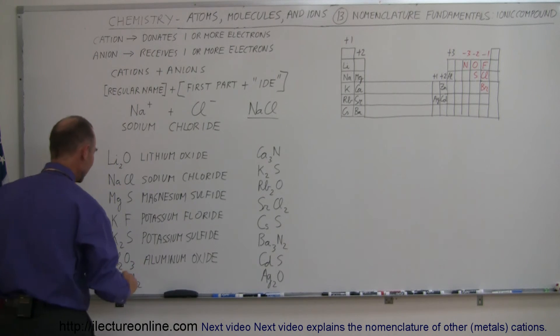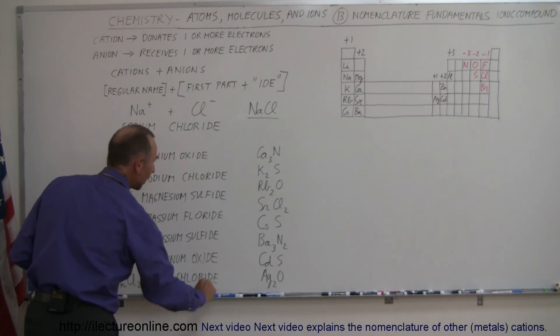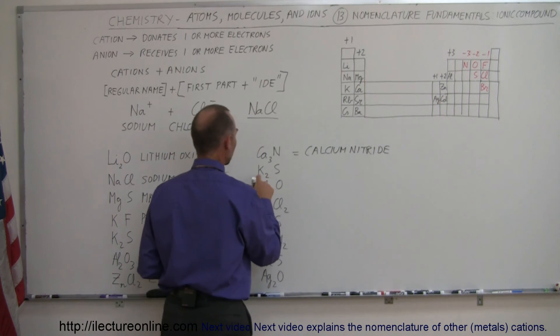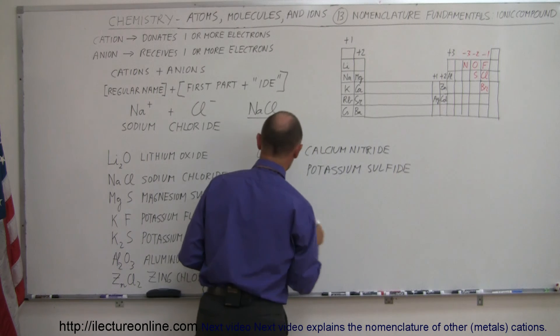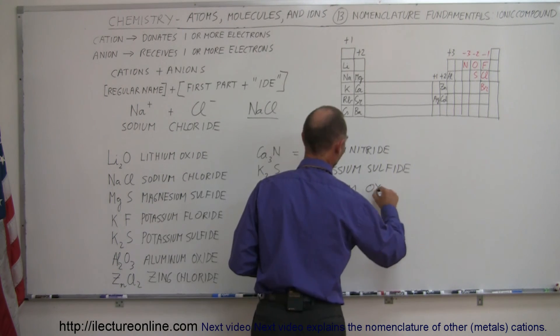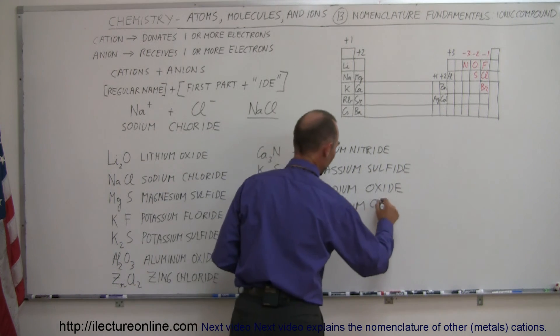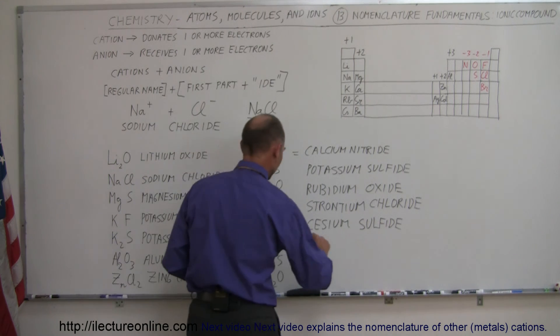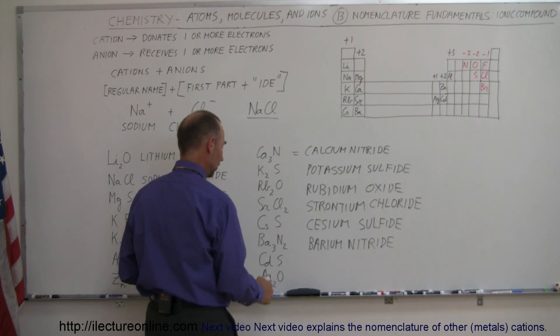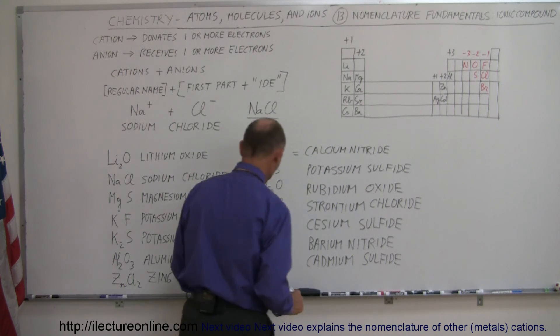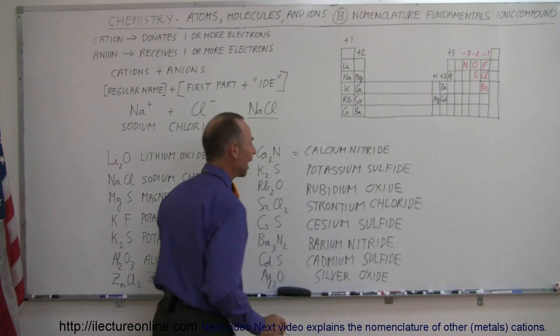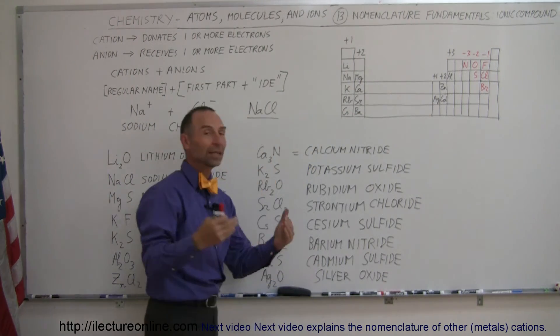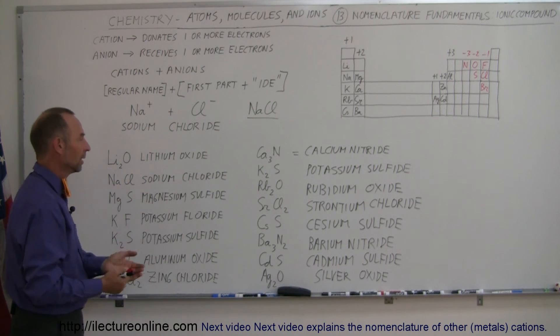This becomes zinc chloride. Here we have calcium and nitrogen, so this is calcium nitride. Next we have potassium sulfide, and then rubidium and oxygen, so this becomes rubidium oxide. Here we have strontium and chlorine, so that becomes strontium chloride. Here we have cesium and sulfur, so this becomes cesium sulfide. Here we have barium and nitrogen, so this becomes barium nitride. Here we have cadmium and sulfur, so this becomes cadmium sulfide. And finally, we have silver and oxygen, so this becomes silver oxide.